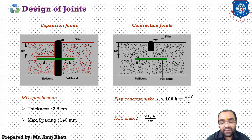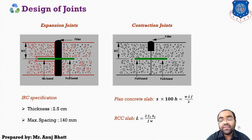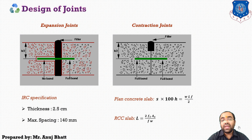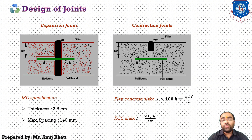For the RCC slab, the contraction in the slab is resisted by the reinforcement, and the spacing between the contraction joints is given as L = 2 × FT × AS / FW. These two formulas cover the provisions of joints — expansion and contraction. Now we will see one example based on the contraction joints.